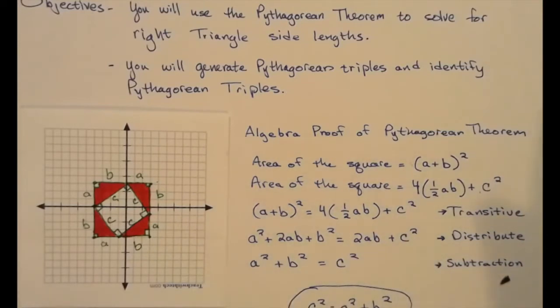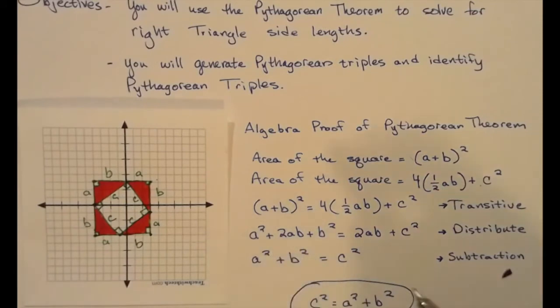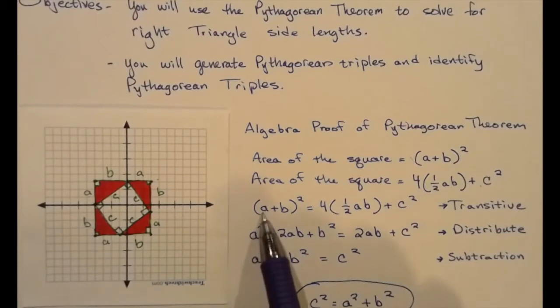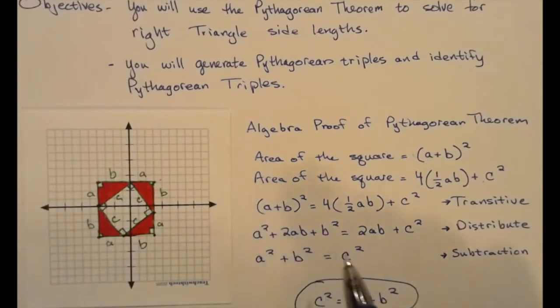Now, because both of these areas are the same, we can use the transitive property of equality to set these two areas equal to each other. And then when we distribute using binomial distribution, sometimes called foiling, we get a² + ab + ab + b². And on the right side of the equation, the four times one half is two. Now, we can then subtract 2ab from both sides, giving us a² + b² = c².